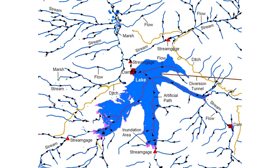Although other scales are available, the NHD High Resolution, at a 1:24,000 scale or better, is the most up-to-date and detailed hydrography dataset for the nation.